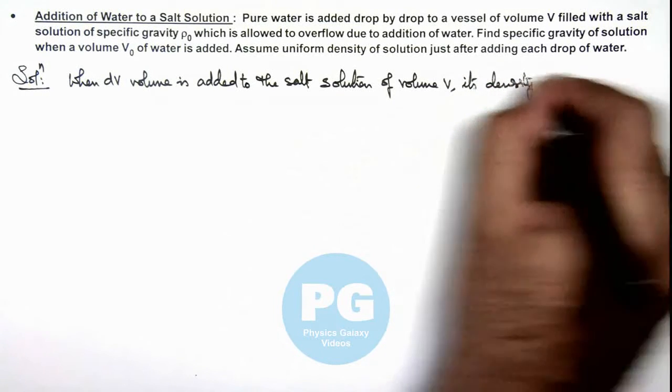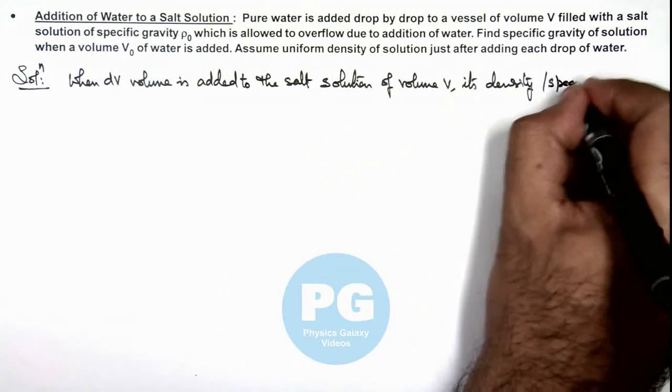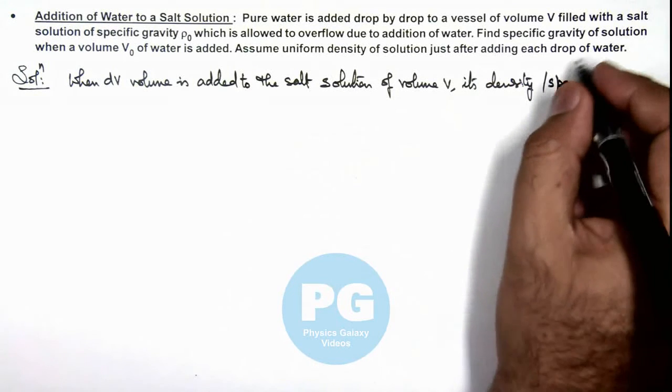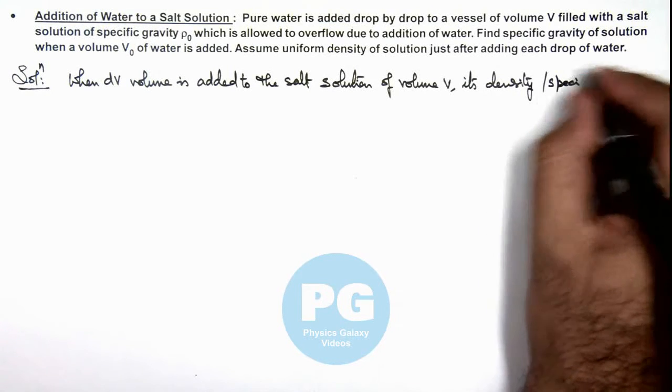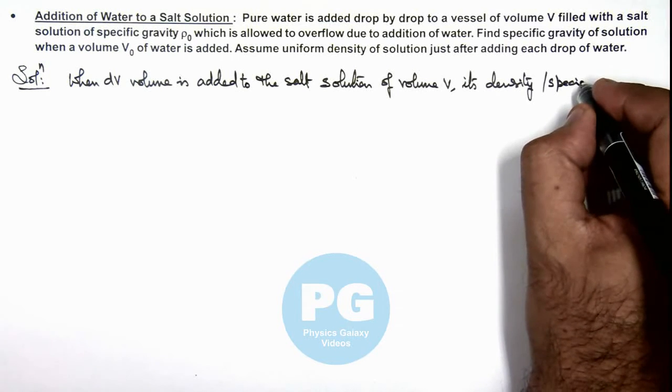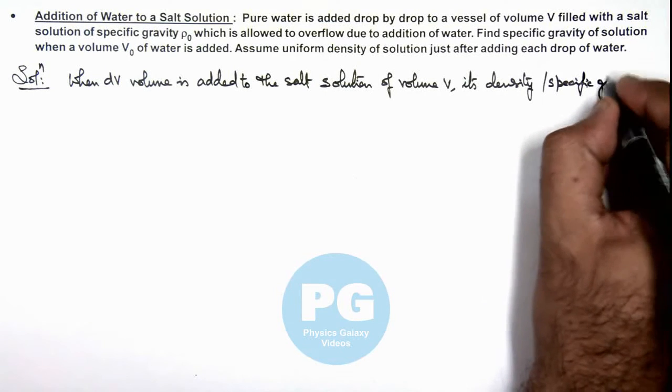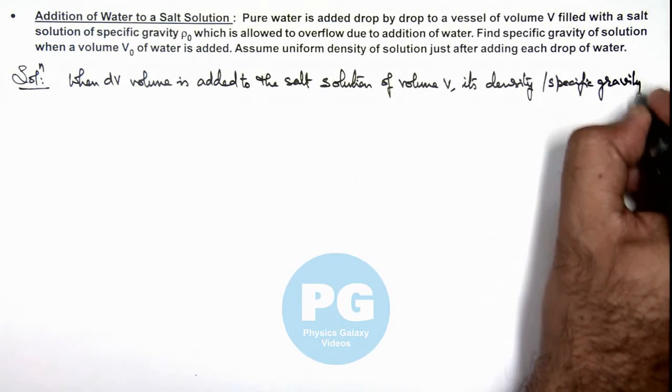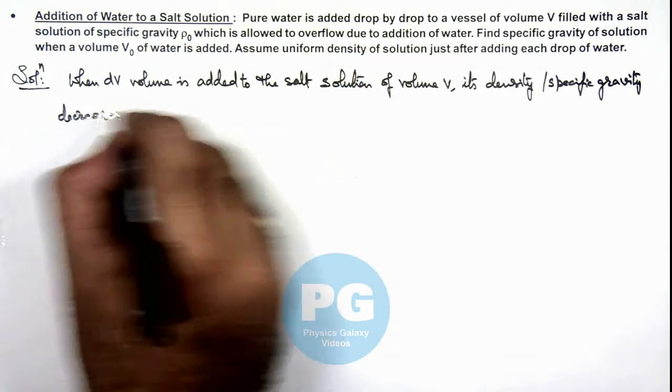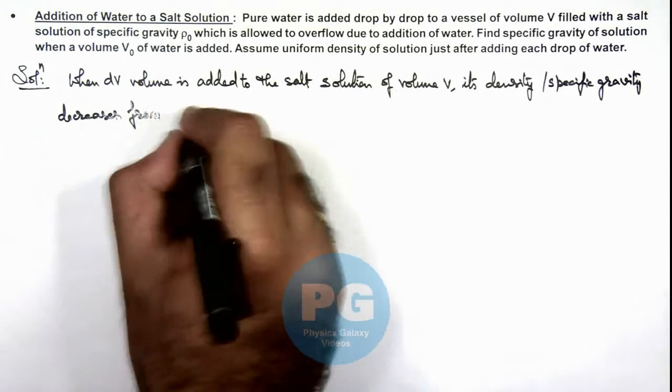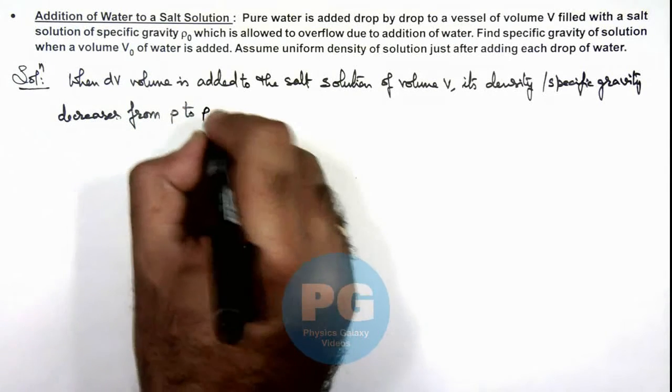Or here we can use the specific gravity, as for water we can consider the specific gravity to be 1, as its density is 1000 kg per meter cube. So here the specific gravity decreases from ρ to ρ minus dρ.